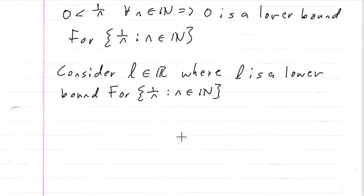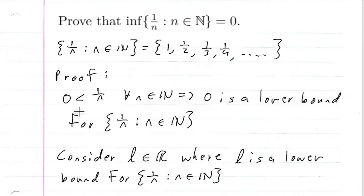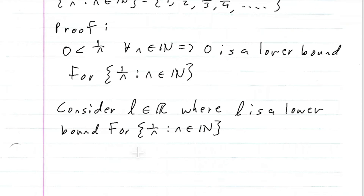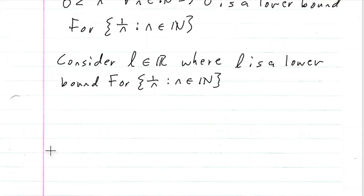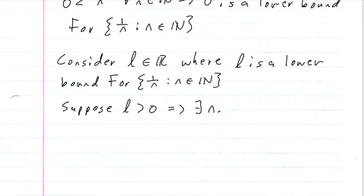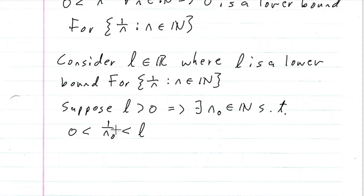So now we're going to think: maybe zero isn't the infimum, maybe this L is the infimum. We're going to suppose that L is bigger than zero. If L > 0, this implies by the Archimedean principle that there exists an n₀ contained in the natural numbers such that 0 < 1/n₀ < L. We know that 1/n₀ > 0 because any n we choose in the natural numbers is bigger than zero.